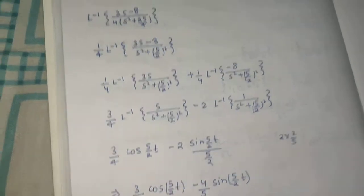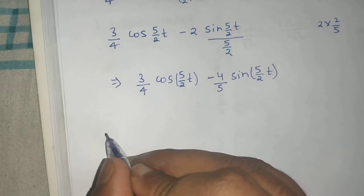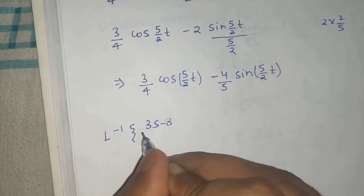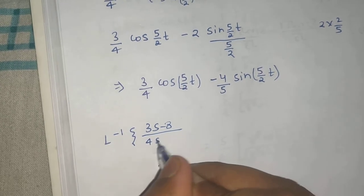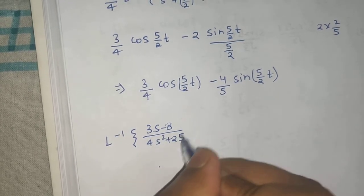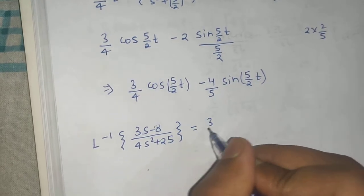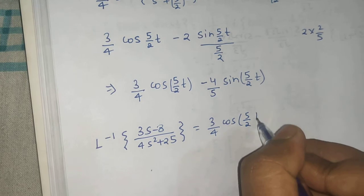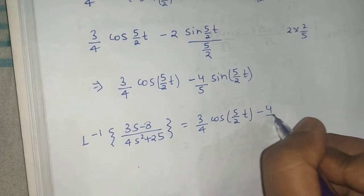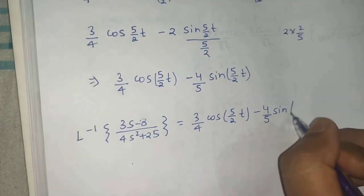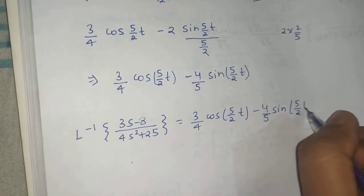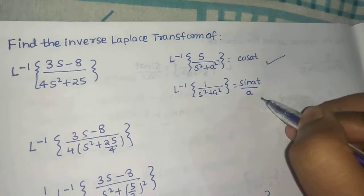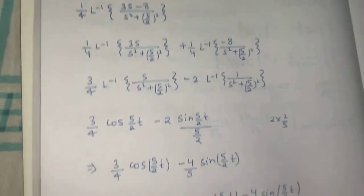So this will be my final answer. What they were asking: Laplace inverse of 3s minus 8 divided by 4s square plus 25. And my solution is 3 by 4 cos 5 by 2 t minus 4 by 5 sin 5 by 2 t. I hope you can recall these two formulas and if you can, you can easily solve this question.